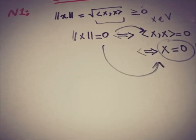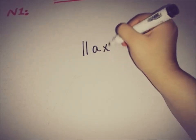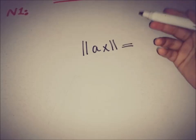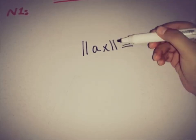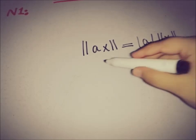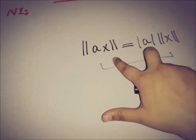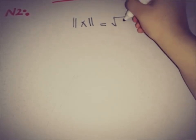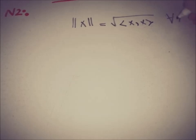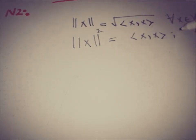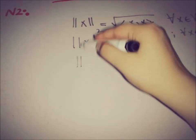The second property of the norm states that for a scalar a from the field and x taken from the vector space, the norm of ax is equal to the magnitude of a times the norm of x. We will now verify whether the relation between the norm space and the inner product space satisfies this condition. We have the link that norm of x equals the inner product of x with itself for all x in V, and squaring gives the inner product form.